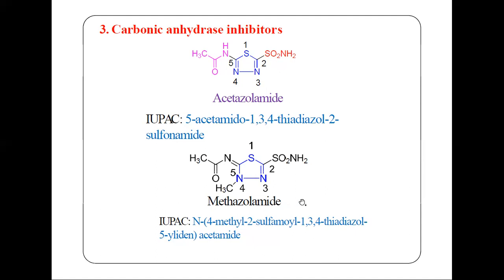The second example for carbonic anhydrase inhibitors is methazolamide. Methazolamide also has a five-membered heterocyclic ring with one sulfur and two nitrogen atoms. In this case, the double bond position is different. At position 2 we have sulfonamide, at position 5 we have acetamide, and at position 4 on the nitrogen we have a methyl group.